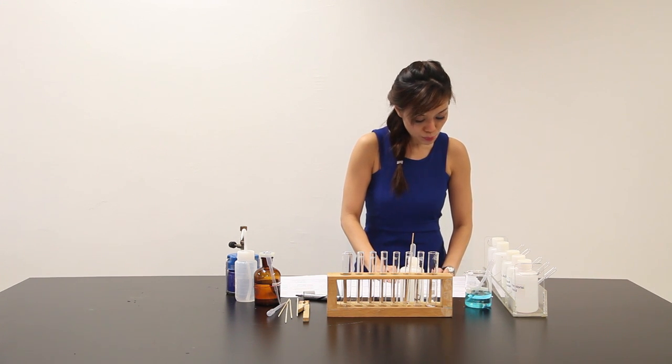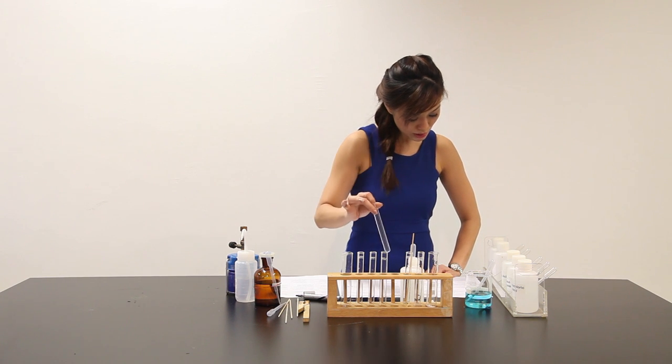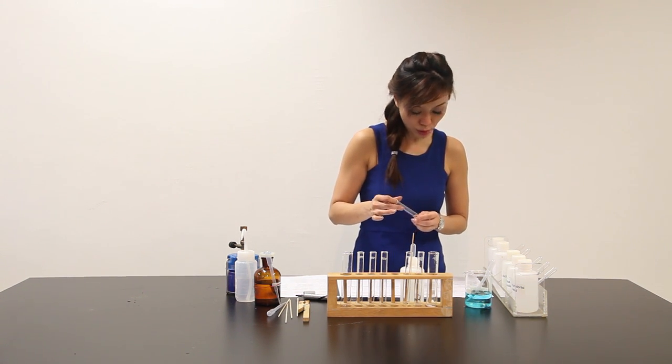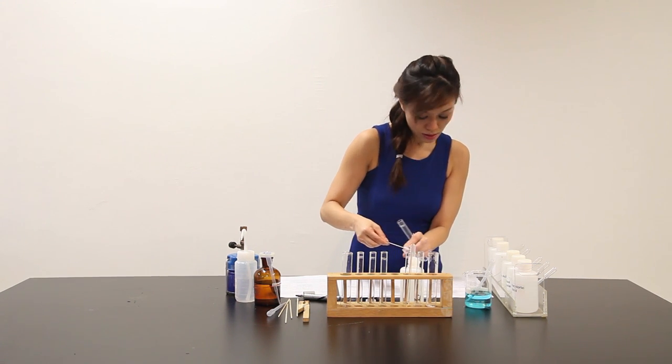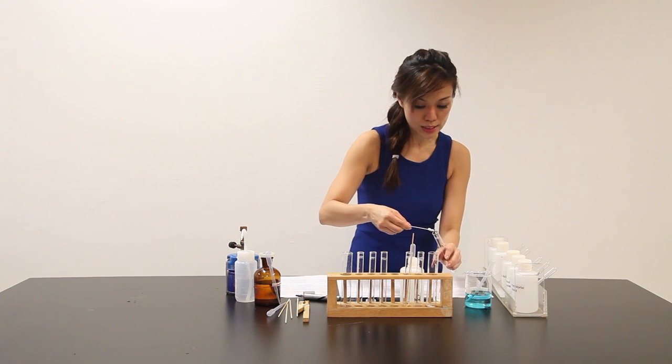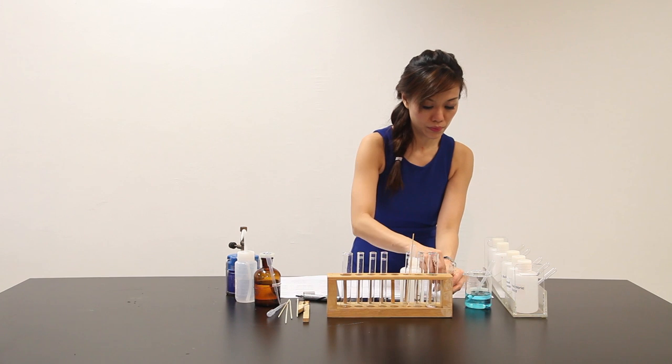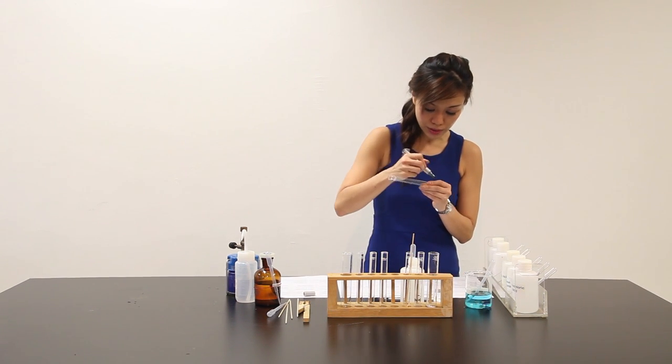Using the smaller tip of a spatula, transfer a small amount of solid X into a test tube and to this add about 2 cm³ of hydrochloric acid. So let me use this. A spatula full. 2 cm³ of HCl.